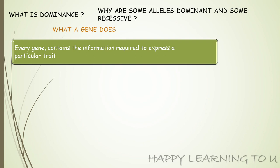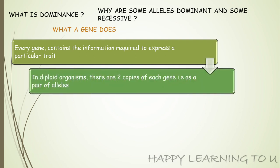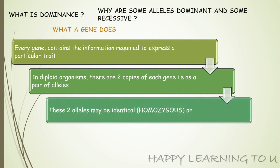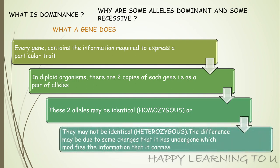In human beings, the gene contains information for hair color, hair texture, skin color, height, and other characteristics. Now in diploid organisms — and human beings are also diploid — there are two copies of each gene, that is, a gene exists as a pair of alleles. These two alleles may either be identical, wherein they are known as homozygous, or they may be non-identical, wherein they are known as heterozygous.